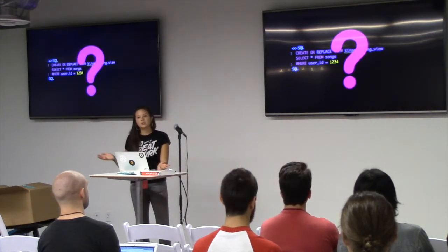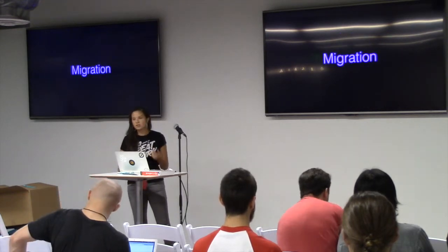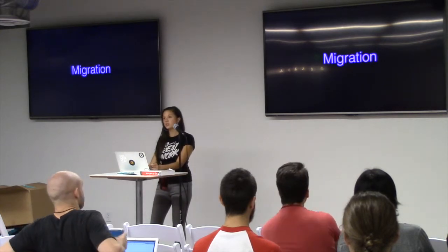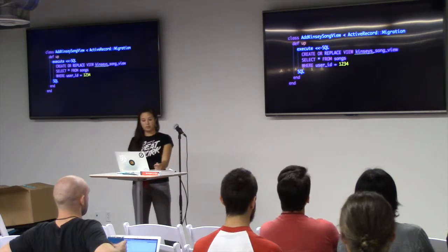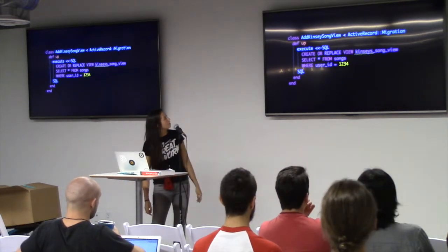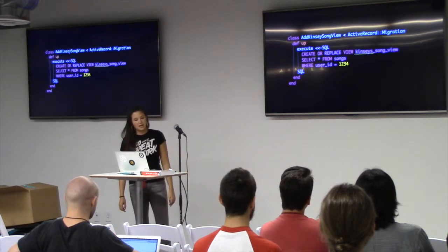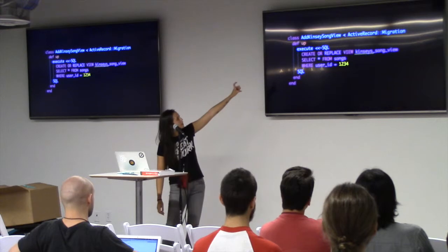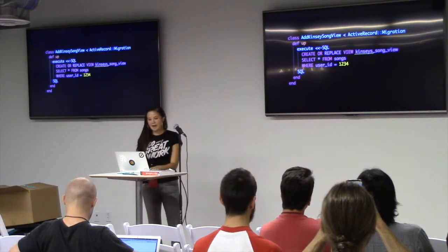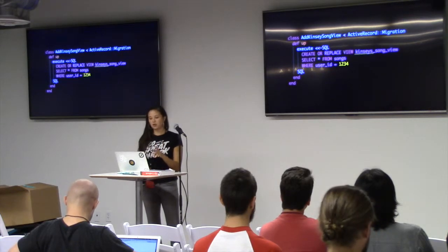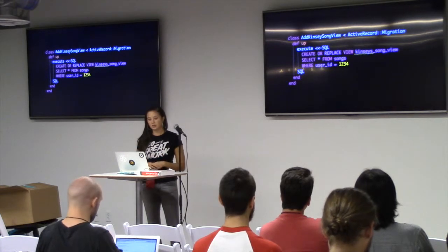So where do I put this in a Rails app — how do I get this table? In a migration. You execute the SQL in a Rails migration; it's really just like creating a table. Here is my example in Rails: I have my Active Record migration with def up, and I just say execute SQL. As you can see, this is my view from the previous slide. I have a table called Kinsey Song View that just contains my songs, and I can go back, use this in other queries, and it still exists.